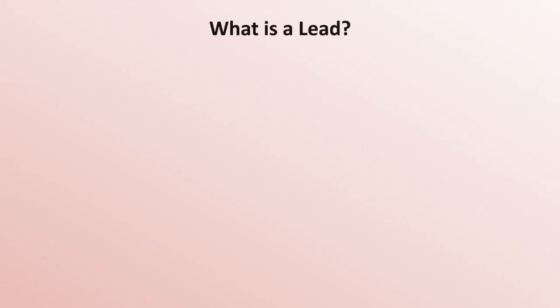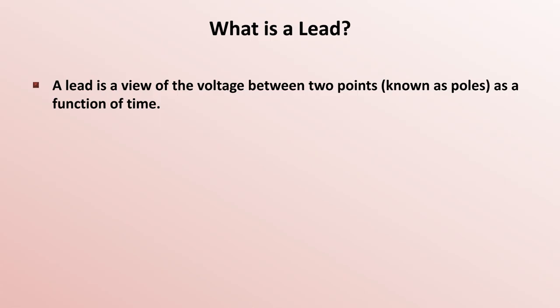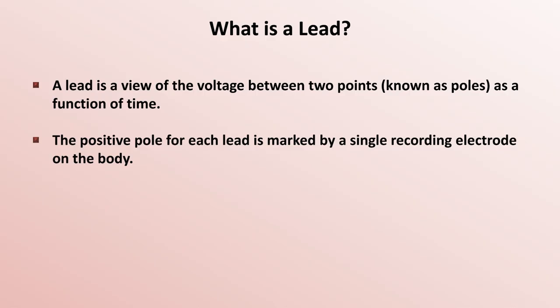Let me start by explaining what an EKG lead is. A lead is a view of the voltage between two points, known as poles, as a function of time. The positive pole for each lead is marked by a single recording electrode on the body.